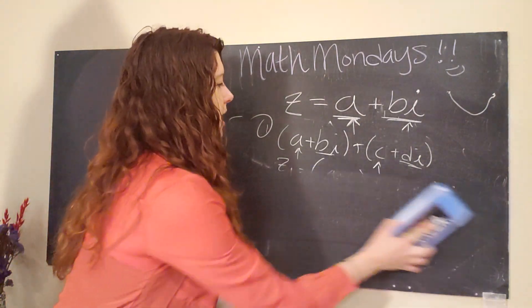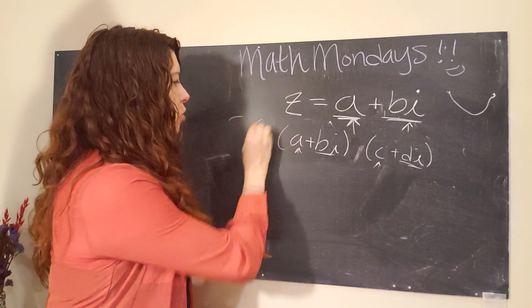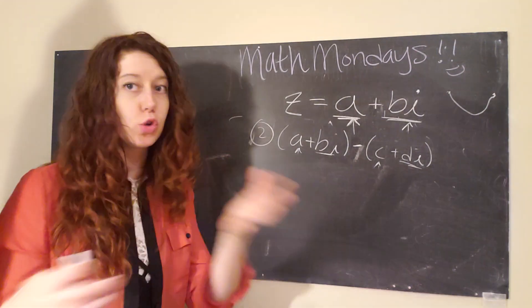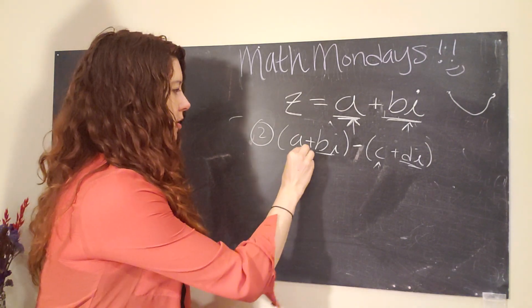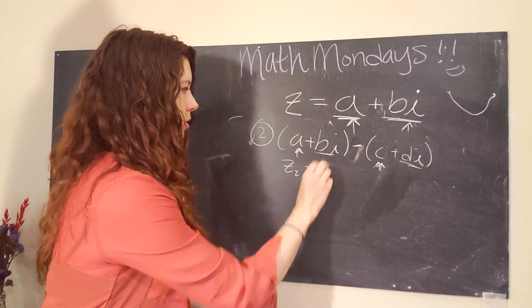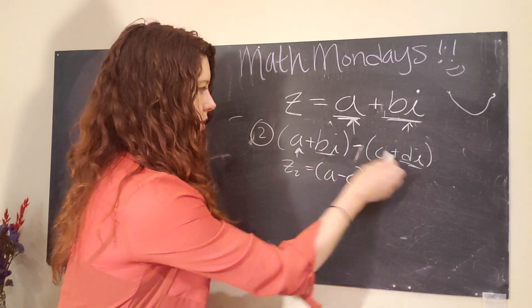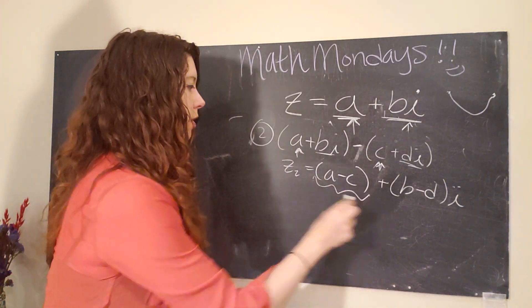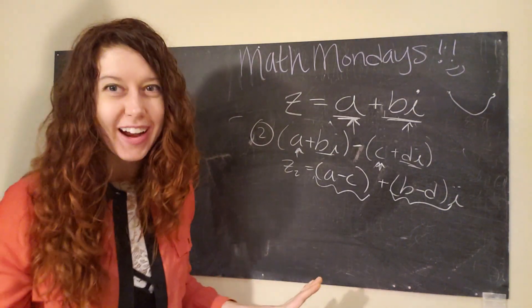What about subtraction? So let's say we have the same thing, but we're going to subtract it. Well, we just do the exact same thing that we did with addition. We keep the two parts separate. We subtract the real numbers together. And so we get Z two equals a minus c, and then plus b minus d i. And again, the real part is going to be a minus c, and the imaginary part is going to be b minus d. Not so bad, right?